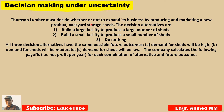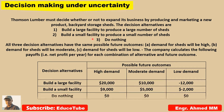Here we have a problem. Thompson Lumber must decide whether or not to expand its business by producing or marketing a new product — say backyard storage sheds. The decision alternatives are: build a large facility, build a small facility, or do nothing. These three decision alternatives have the same possible future outcomes: high demand, moderate demand, and low demand.